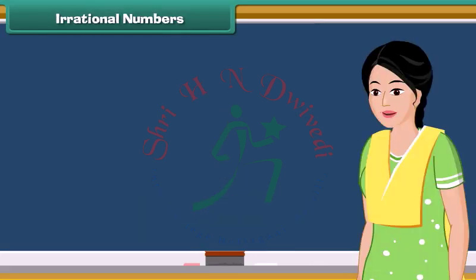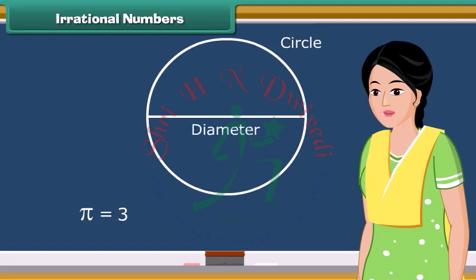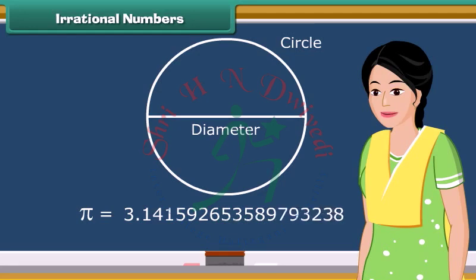Some decimals called irrational numbers don't end or repeat. A good example is pi, which is the ratio of circumference of the circle to its diameter. It begins with the number 3.14159 and keeps going on with no particular pattern into infinity.